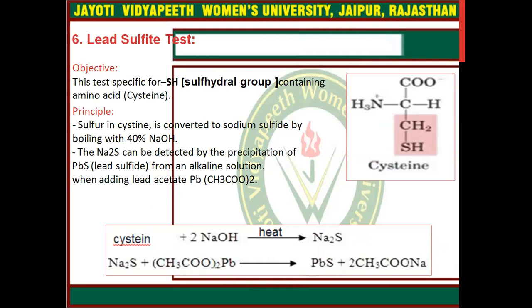Next is the lead sulfide test. This test is specific for the sulfhydryl (SH) group, meaning it tests for the amino acid cysteine. Sulfur in cysteine is converted to sodium sulfide (Na2S) by boiling with 40% NaOH. The Na2S can be detected by precipitation of PbS from an alkaline solution.